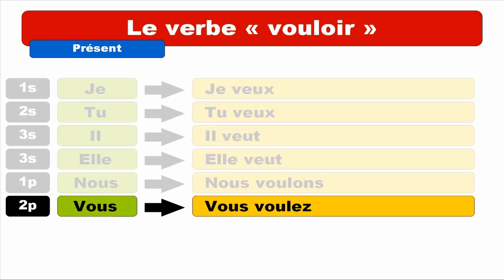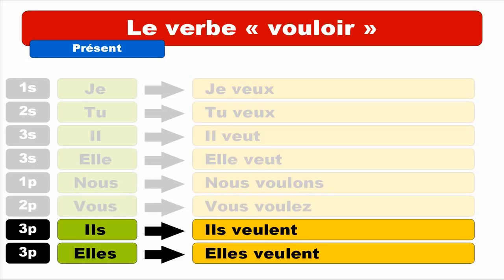Let's start with ILS — we get ILS VEULENT. The E is quite open — VEULENT. The final ENT is not pronounced, so you only pronounce V-E-U-L, quite lightly — ILS VEULENT. Repeat. ILS VEULENT. Same form for ELLES — ELLES VEULENT. Repeat. ELLES VEULENT.